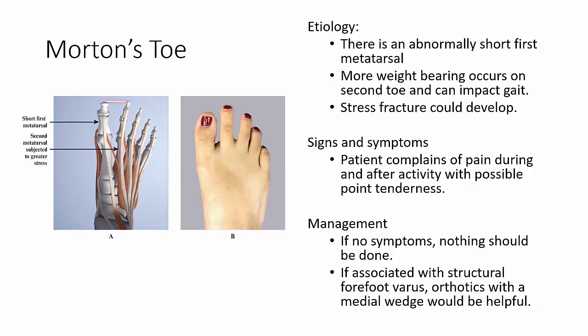More weight bearing then occurs on the second toe and can impact gait, as toe-off frequently goes through the second toe instead of the big toe. In such cases, stress fractures may develop. Signs and symptoms include pain during or after activity with possible point tenderness over the fracture site. A callus will frequently develop under the second metatarsal head. If there are no symptoms, leave it alone; if associated with structural forefoot varus, orthotics with a medial wedge are helpful.